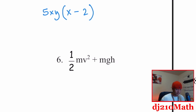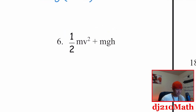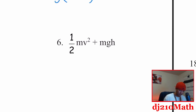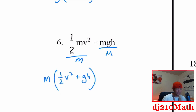Number six is a real physics-looking question. The only thing common to both terms is M. So if you factor out an M, we get M times one-half V squared plus GH. That's the greatest common factor common to both terms.